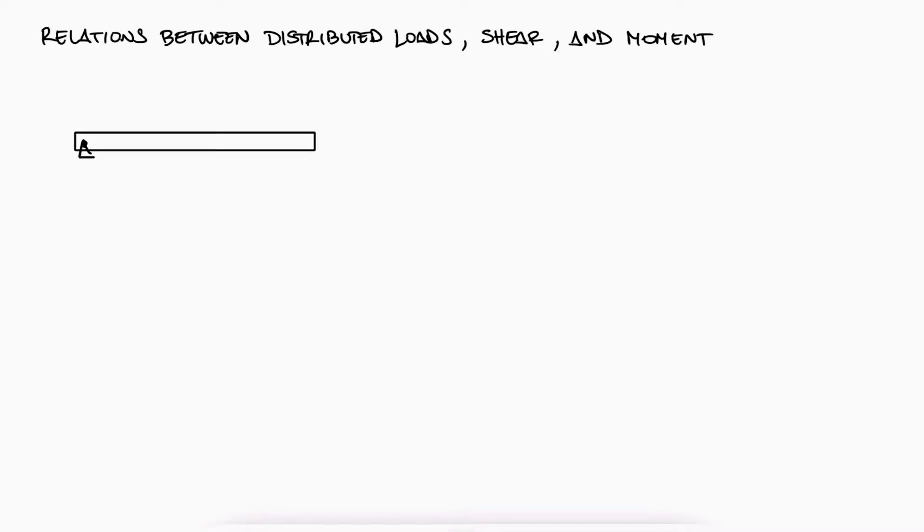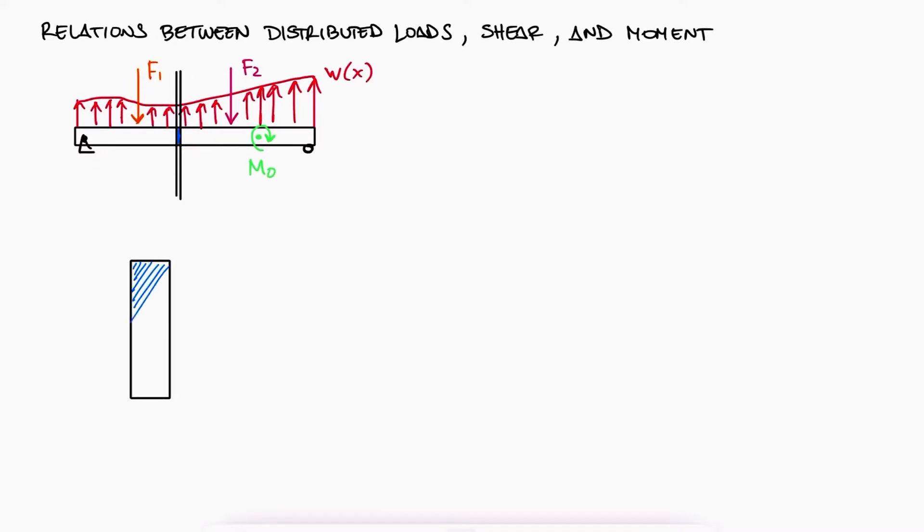For any beam subjected to a collection of different types of external loads, we can perform a tiny cut along the beam. Drawing all the reaction loads at both ends, we would have a moment at the left and a moment plus a small change in moment on the right, in the opposite direction.